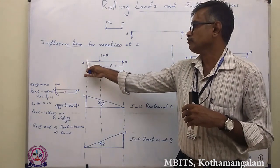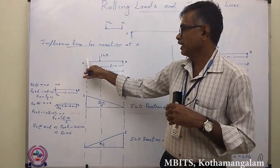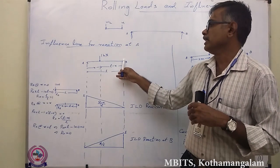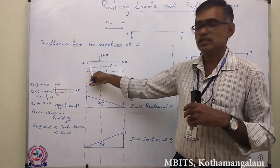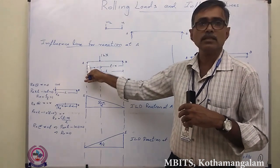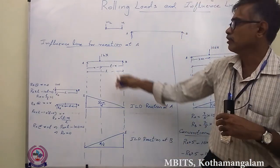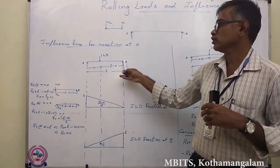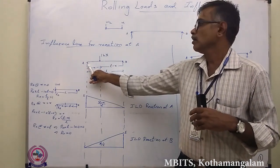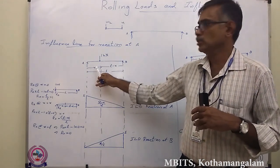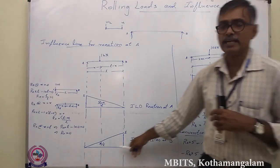Moving the unit load from A to an intermediate point X, and taking moment about A: −RB × L + 1 × X = 0, giving RB = X/L. When the unit load reaches point B, taking moment about A: −RB × L + 1 × L = 0, giving RB = L/L = 1. This completes the influence line diagram for reaction at B.